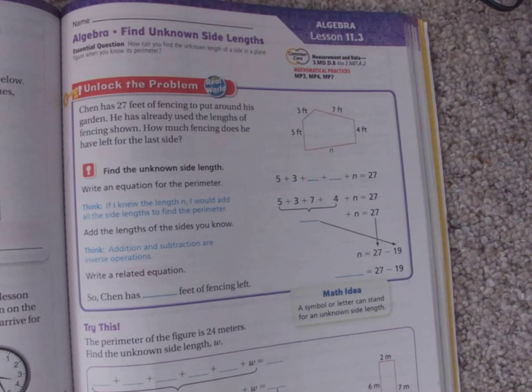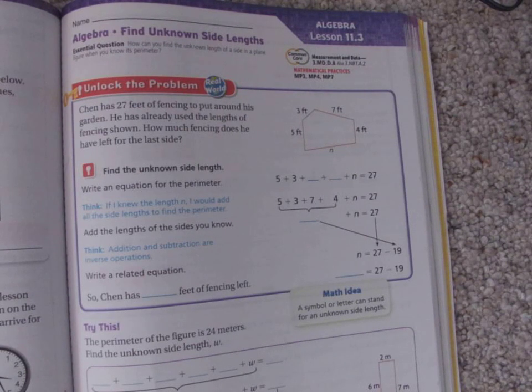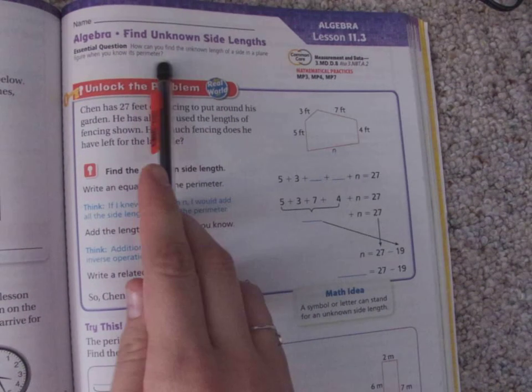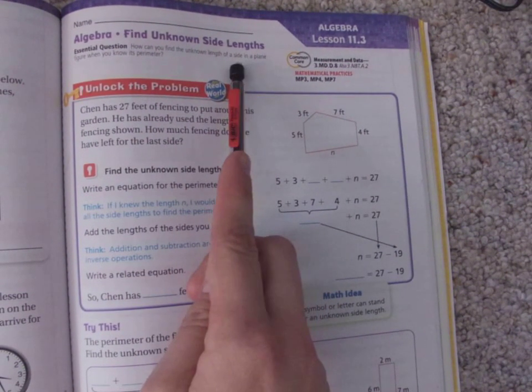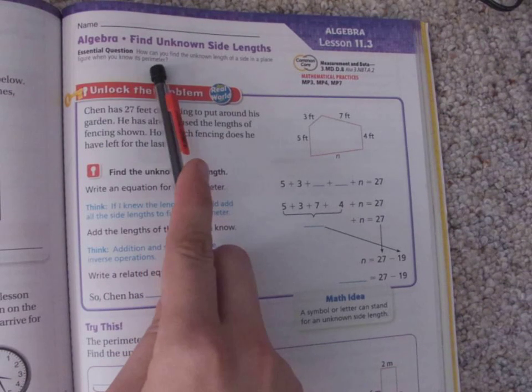I will also be doing a Zoom call for help during this. Some of us actually did a little bit of a challenge on Tuesday and we practiced finding these unknown side links. So essential question today, how can you find the unknown length of a side in a plane figure when you know its perimeter?